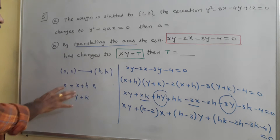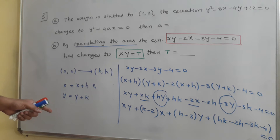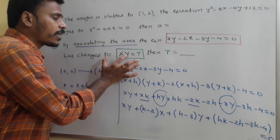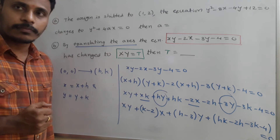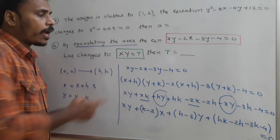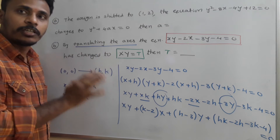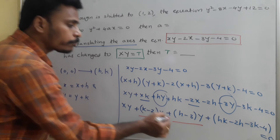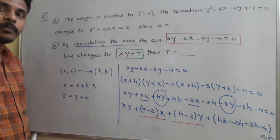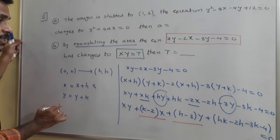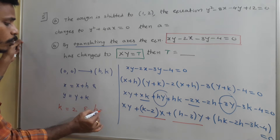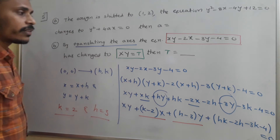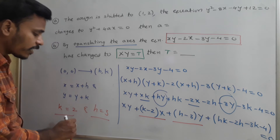Now, the equation in the new system is of the format XY equals t — that means we need only the XY term and a constant term. So we don't need the X term and Y term. To eliminate the X term and Y term, we need k equals 2 and h equals 3. If you take k equals 2, the X coefficient becomes zero. If you take h equals 3, the Y coefficient becomes zero. So take k equals 2 and h equals 3.